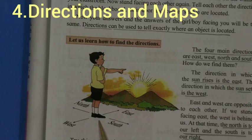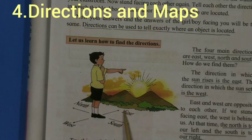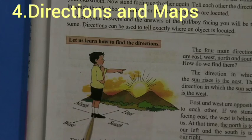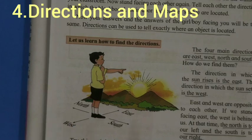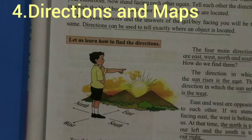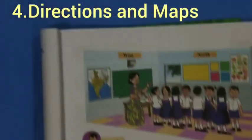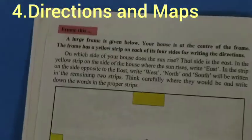Suppose you are standing facing the sun. The direction in which the sun rises is called the east. Behind you is the west. To your right is the south, and to your left is the north. This gives us the four main directions.